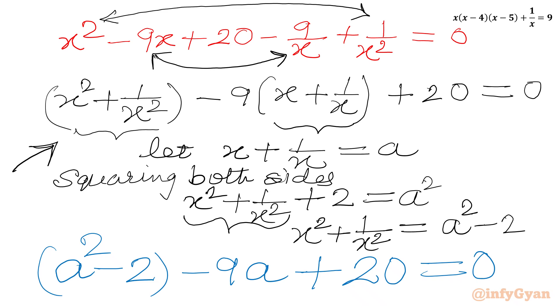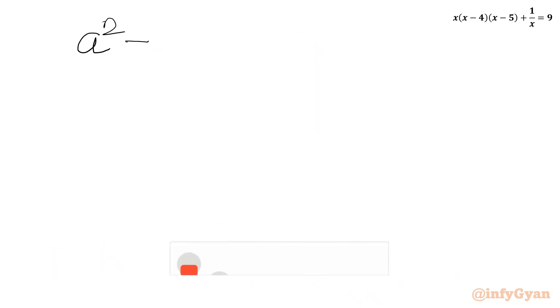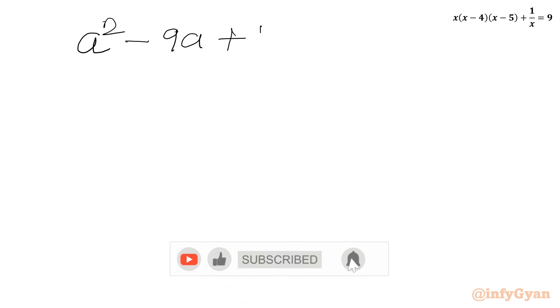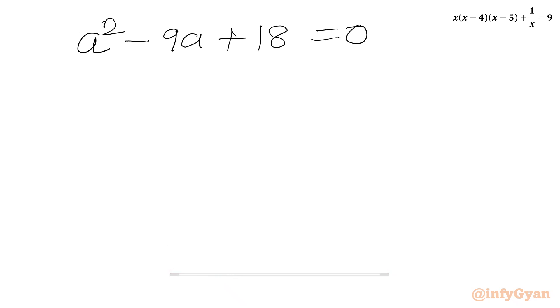Now we simplify the LHS. Minus 2 plus 20 is 18. So we can write A squared minus 9A plus 18 equal to 0, where A is our substitution x plus 1 over x.